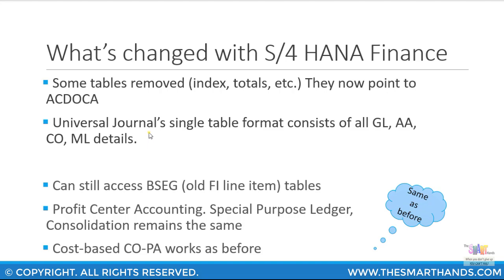One major change regarding controlling in the universal journal entry table is that you will see account-based COPA. We will cover COPA in later presentations, but to give an insight: the universal journal table will have account-based COPA only. For costing-based COPA, you can still use the legacy tables and run reports, but the recommended approach with S/4HANA Finance is now to use account-based COPA, as it allows more detailed line item analysis. We've now looked at the S/4HANA structure — in the next presentation we look at the reporting options.